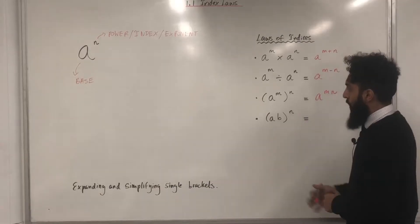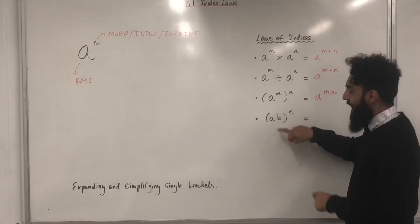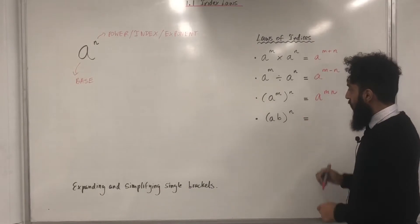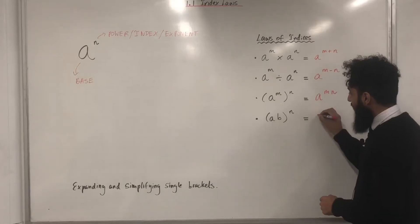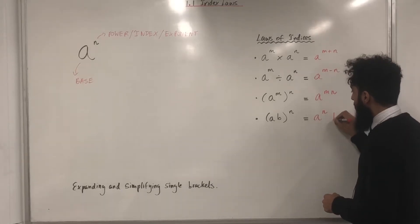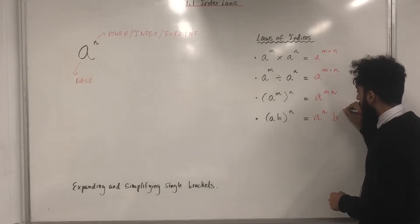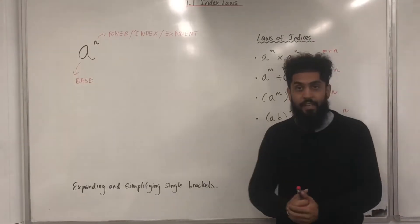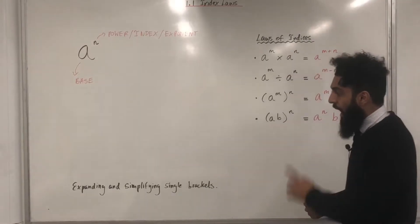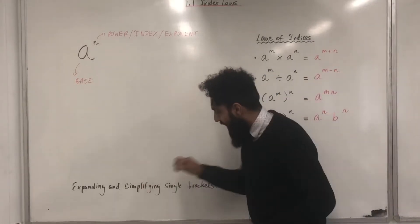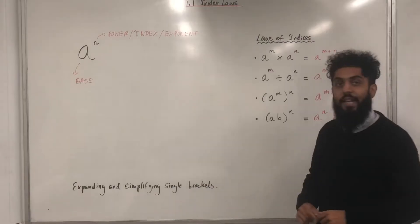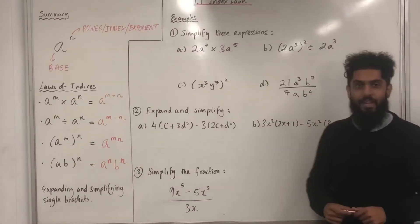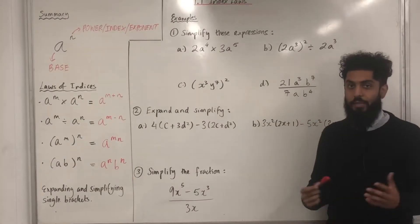The final law: A, B in brackets to the power N. Over here, we need to raise A to the power N and B to the power N. In this particular section, I'll also be covering expanding and simplifying single brackets. Let's have a look at some examples.